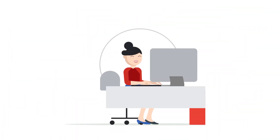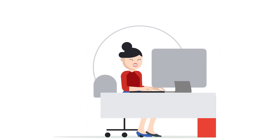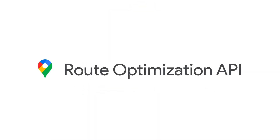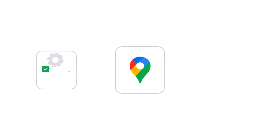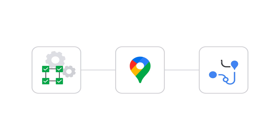Solving this manually is humanly impossible. That's where technology comes in. The Google Maps Platform Route Optimization API harnesses the power of advanced optimization algorithms to crack this puzzle and find efficient routes according to your requirements.